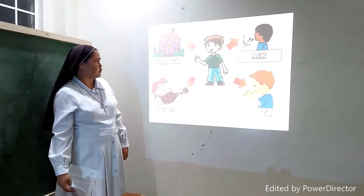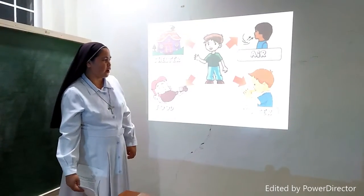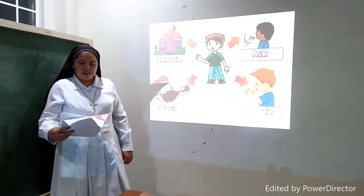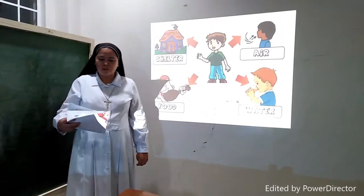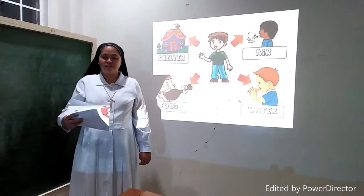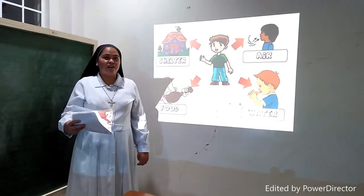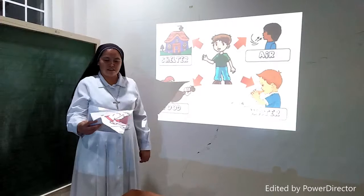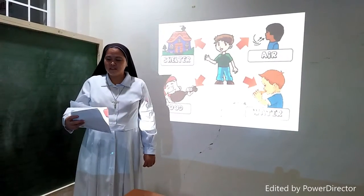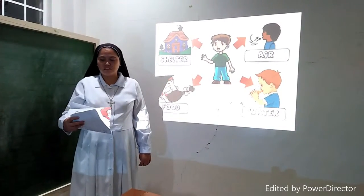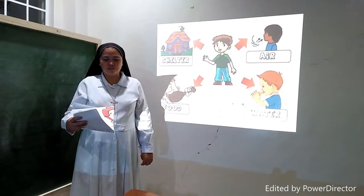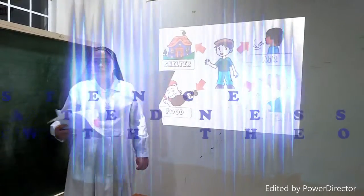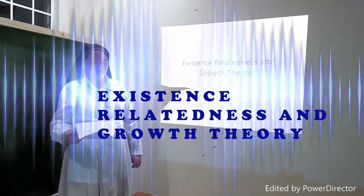I have here shelter, air, water, and food. This picture represents the ERG — Existence, Relatedness, and Growth Theory by Clayton Paul Alderfer.